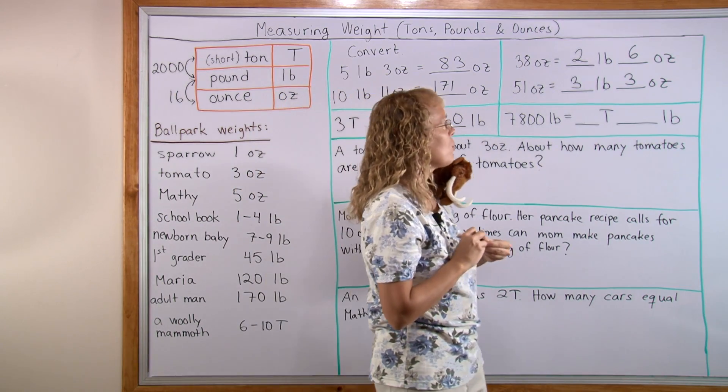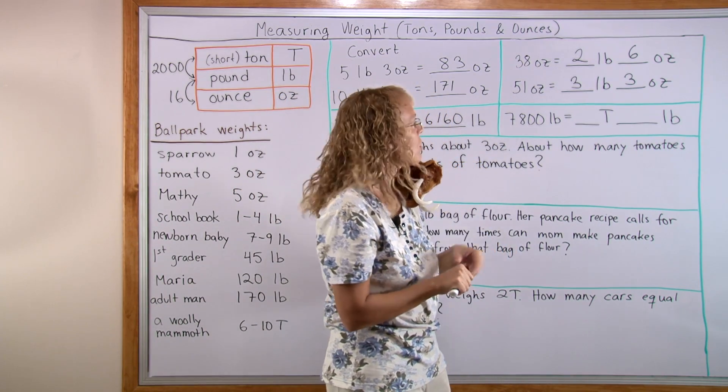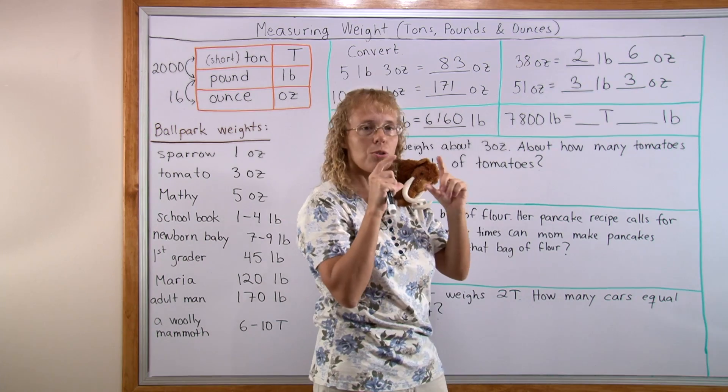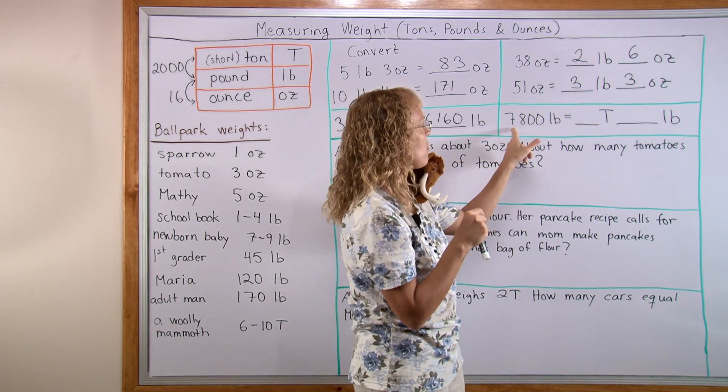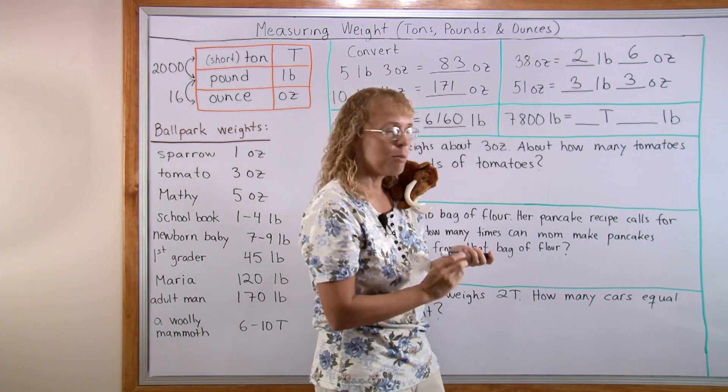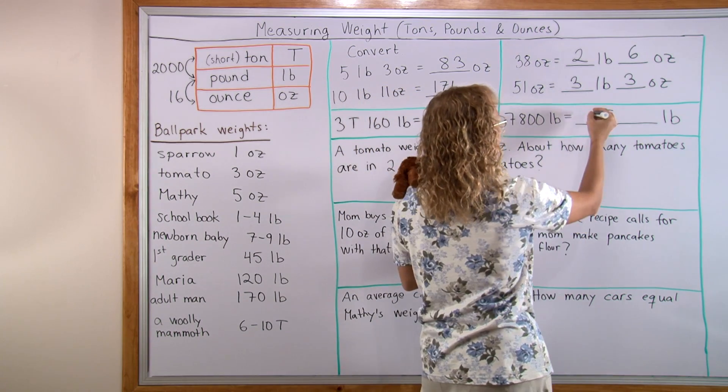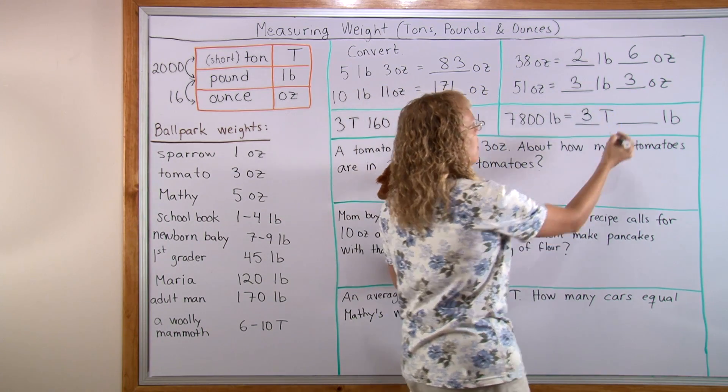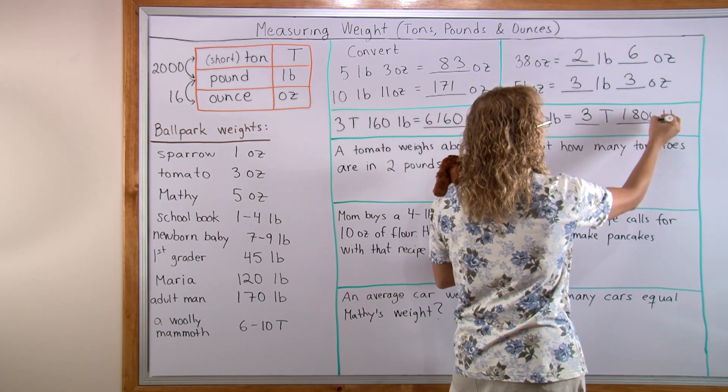7,800 pounds into tons and pounds. Think of those 2,000 pound increments. How many are here? 3 times 2,000 would be 6,000, so 3 tons with 1,800 pounds left over.